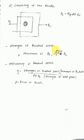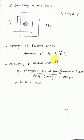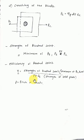Now, the strength of the riveted joint is the minimum of PT, PS, or PC. To find the efficiency of the riveted joint, take the minimum of PT, PS, or PC and divide by the original strength of the solid plate. The strength of the solid plate equals sigma_T multiplied by thickness multiplied by pitch.